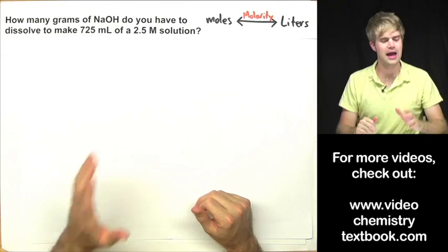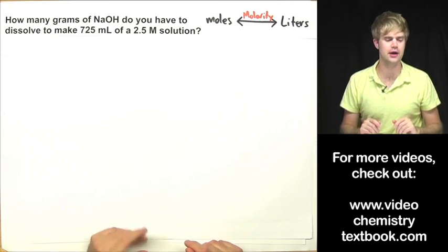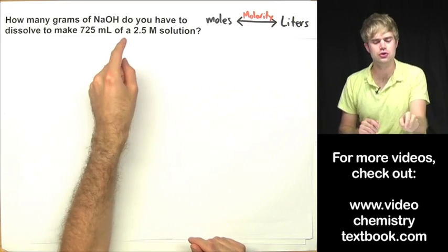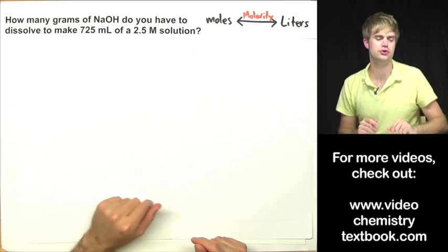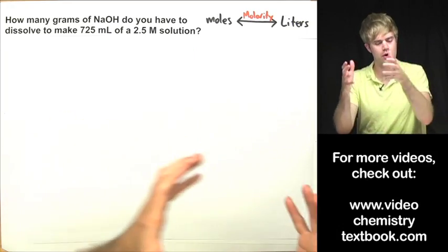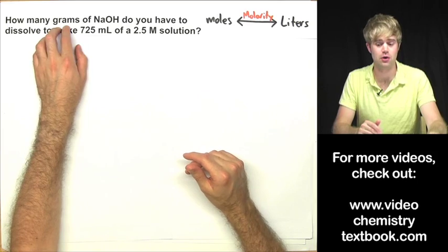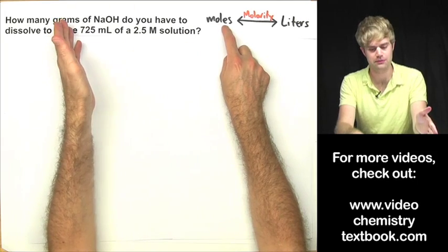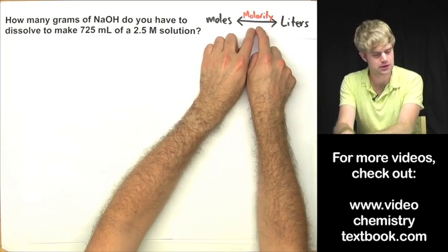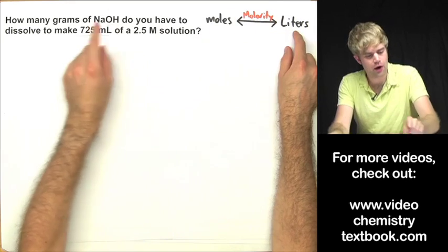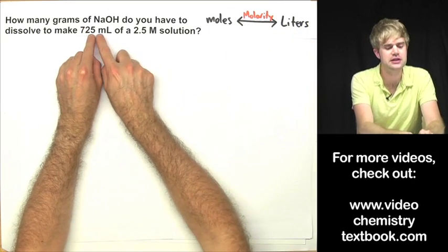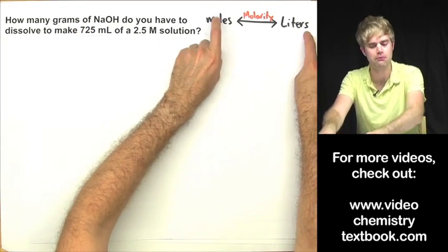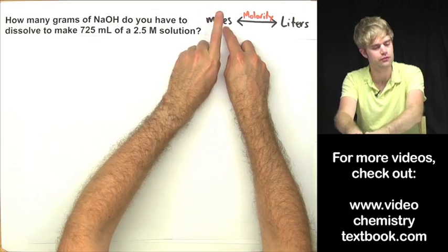Let's do one more. How many grams of NaOH — sodium hydroxide — do you have to dissolve to make 725 milliliters of a 2.5 molar solution? We're looking for grams. Grams isn't something we can get directly from molarity, but we can get moles and then go to grams from there. What we can plug into molarity is liters, but the volume here is given in milliliters. So we'll convert milliliters to liters first, then use molarity to get moles, then convert moles to grams.